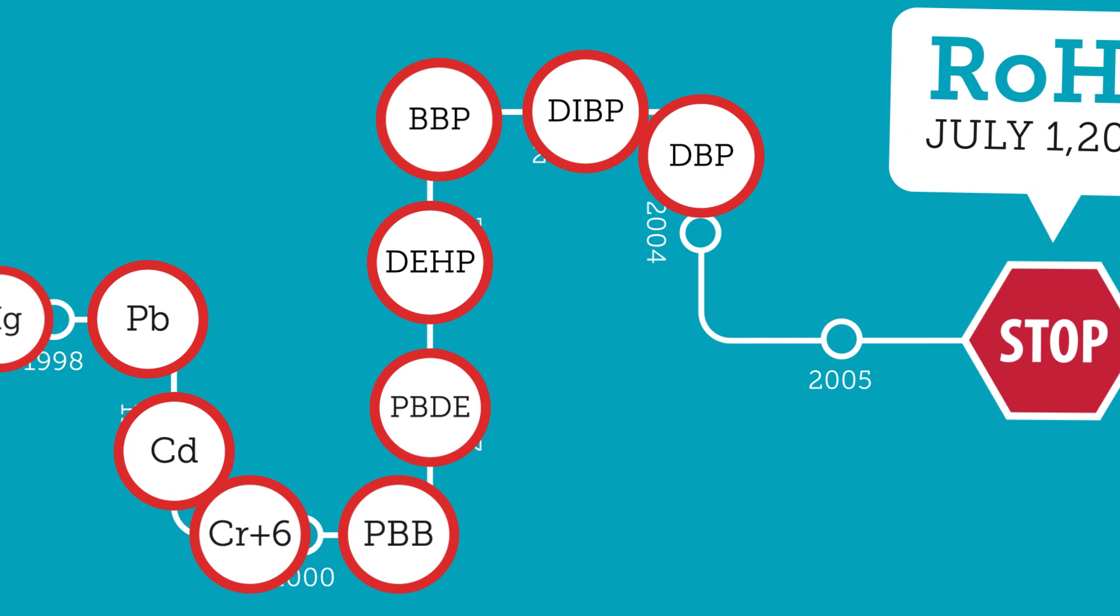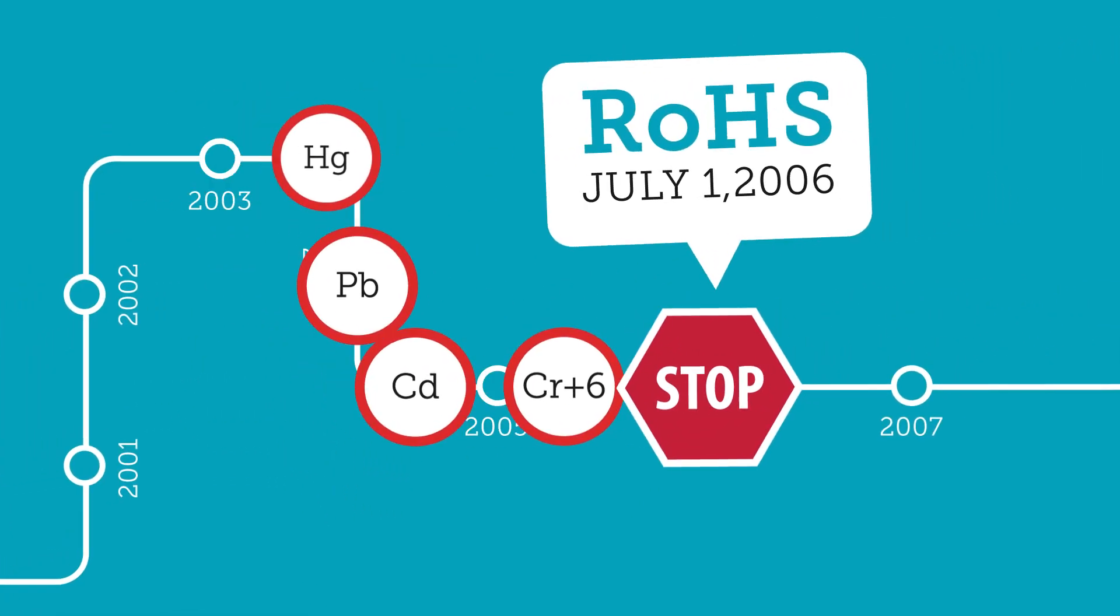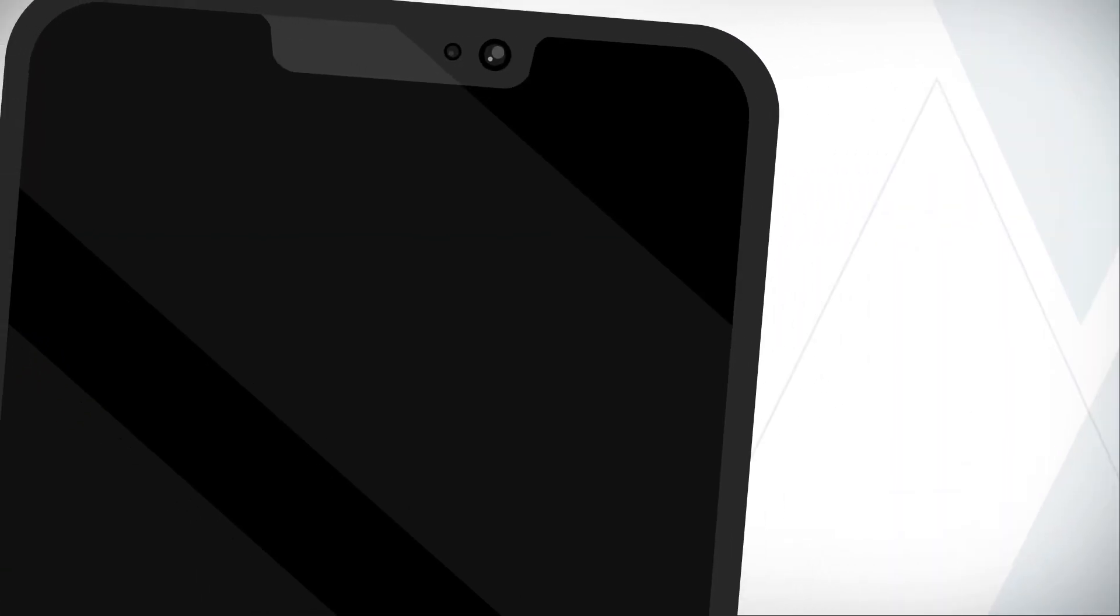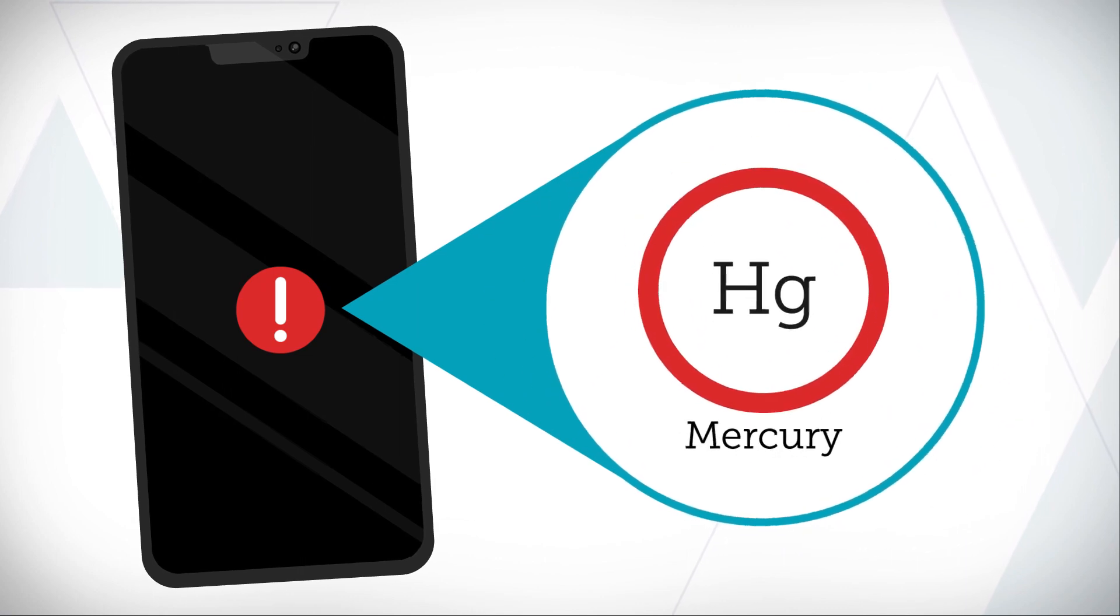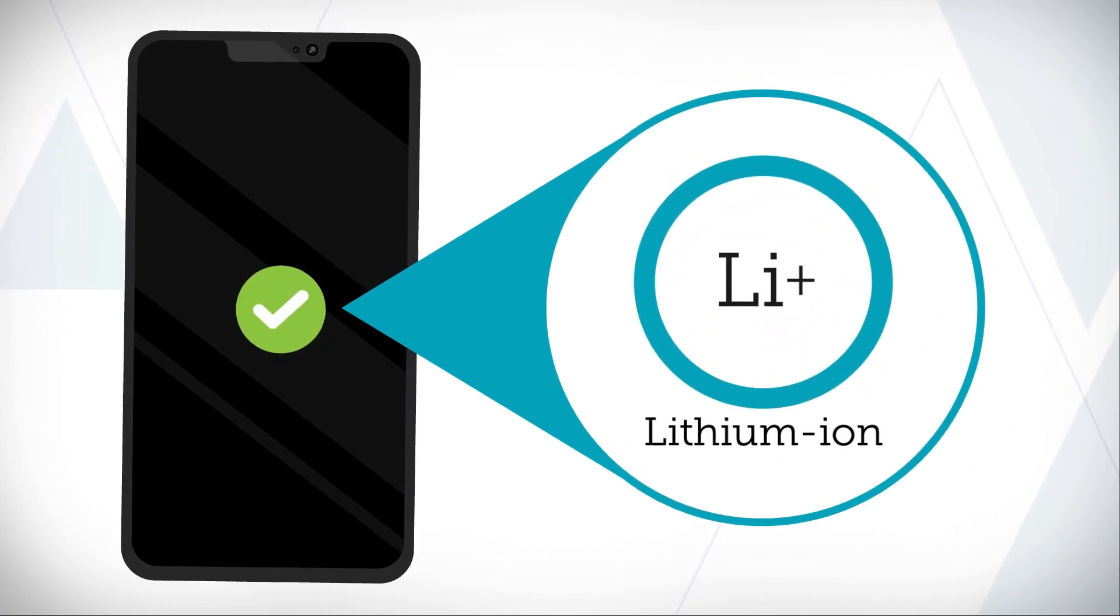So regulators introduced exemptions to help phase them out gradually. Exemptions allow manufacturers to identify and replace restricted substances in their products over time.